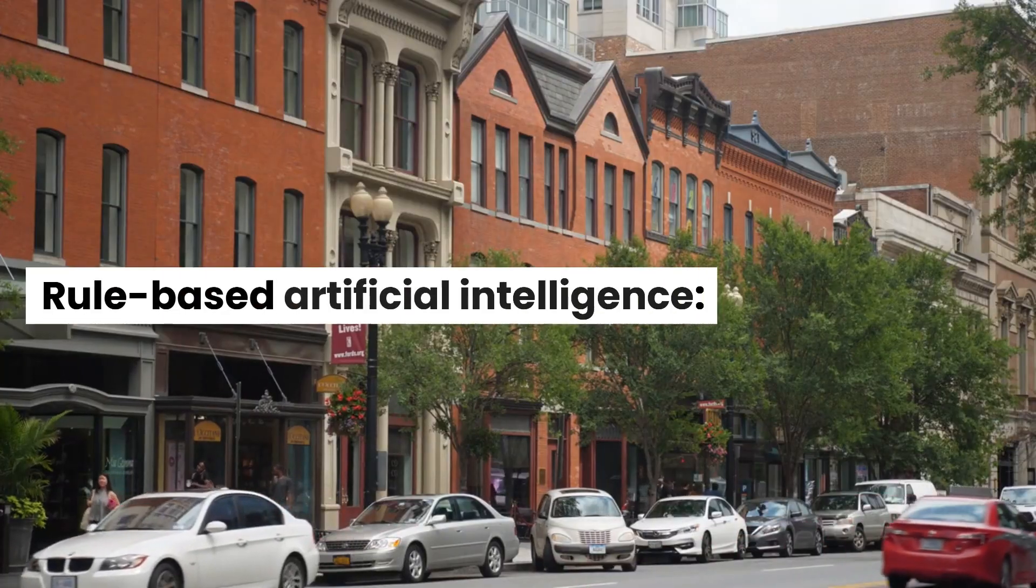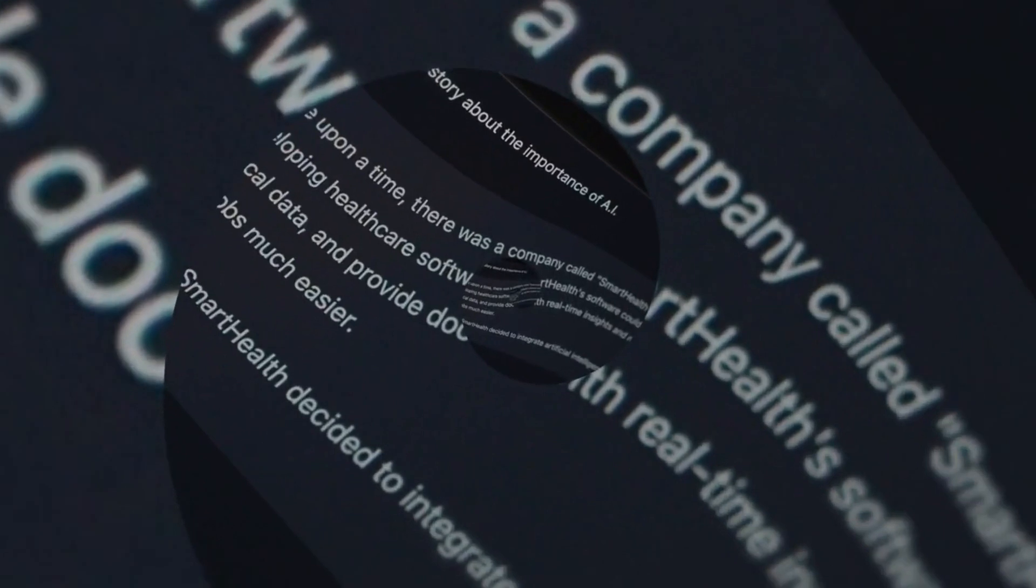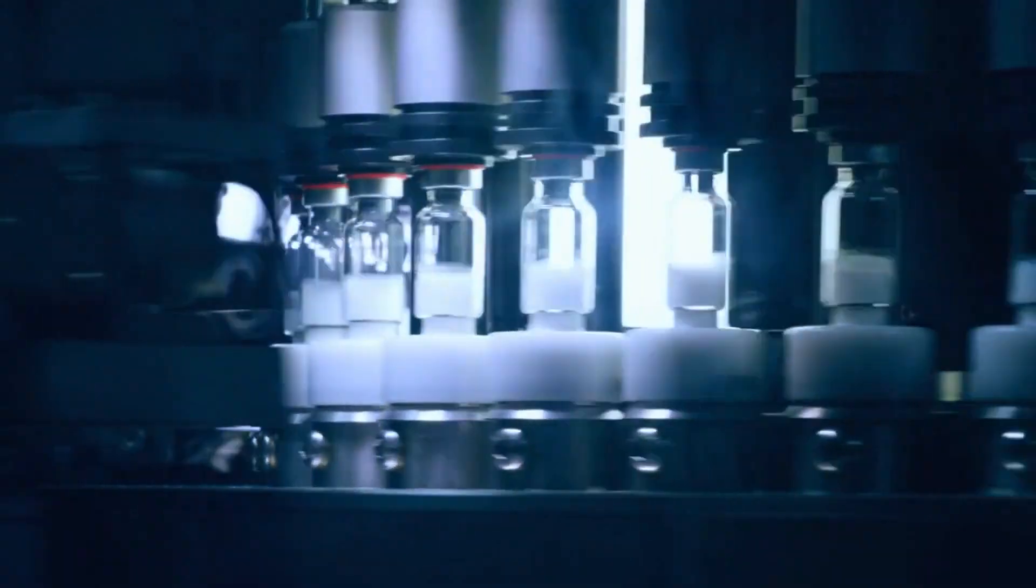Rule-based artificial intelligence. Rule-based artificial intelligence, also known as expert systems, is a powerful type of artificial intelligence that uses a set of predefined rules and logical reasoning to solve problems. This technique is particularly useful in fields such as medicine,